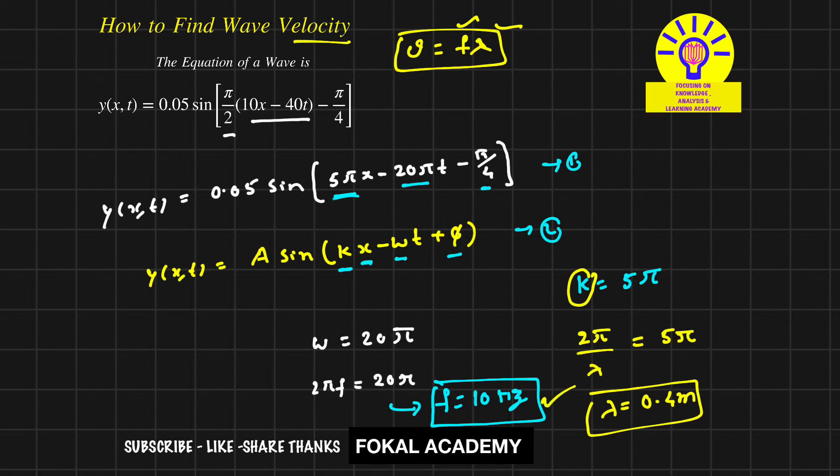Now multiply the frequency and wavelength to get wave velocity. That is 10 hertz times 0.4 meters, which equals 4 meters per second. This is the wave velocity for the given problem.